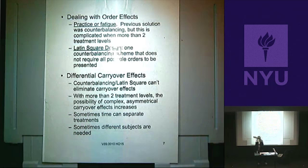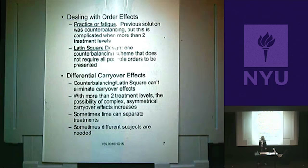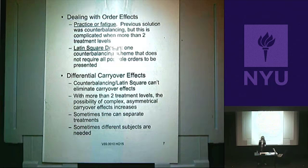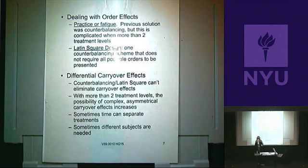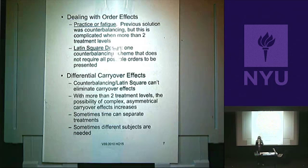But what if you don't have just two things, but three or four? A person has to see A, B, C, and D. How do you counterbalance that? If you have four conditions, how many orders do you need to be totally counterbalanced? Twenty-four — it's four factorial: 4 times 3 times 2 times 1. You might need multiple people for each of those 24 orders, and that's just for the order effects. That's not an effective way to do it.